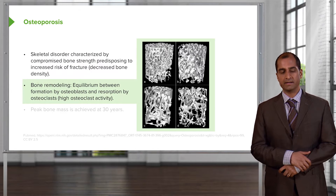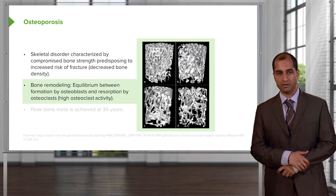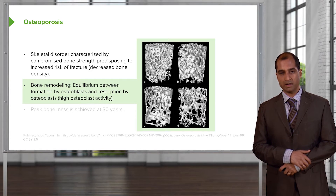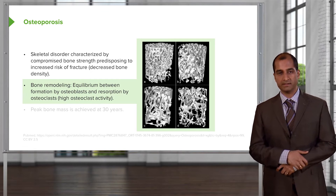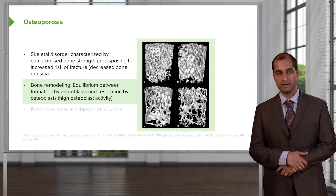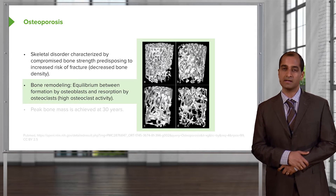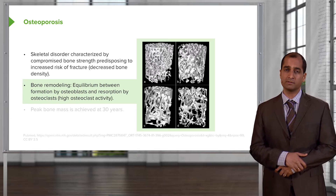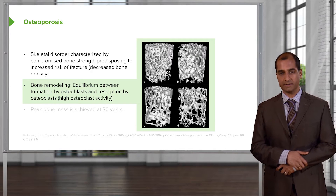Bone remodeling — what does that mean? It's the balance between osteoclasts and osteoblasts, which is absolutely required for proper bone integrity. The equilibrium between the formation by osteoblasts and the resorption — meaning removal of calcium from the bone by osteoclasts. When that balance has been lost and an imbalance takes place, osteoporosis can result.